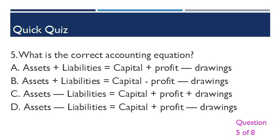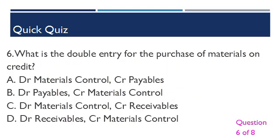Question 6: What is the double entry for the purchase of materials on credit? A. Debit materials control, credit payables. B. Debit payables, credit materials control. C. Debit materials control, credit receivables. D. Debit receivables, credit materials control.